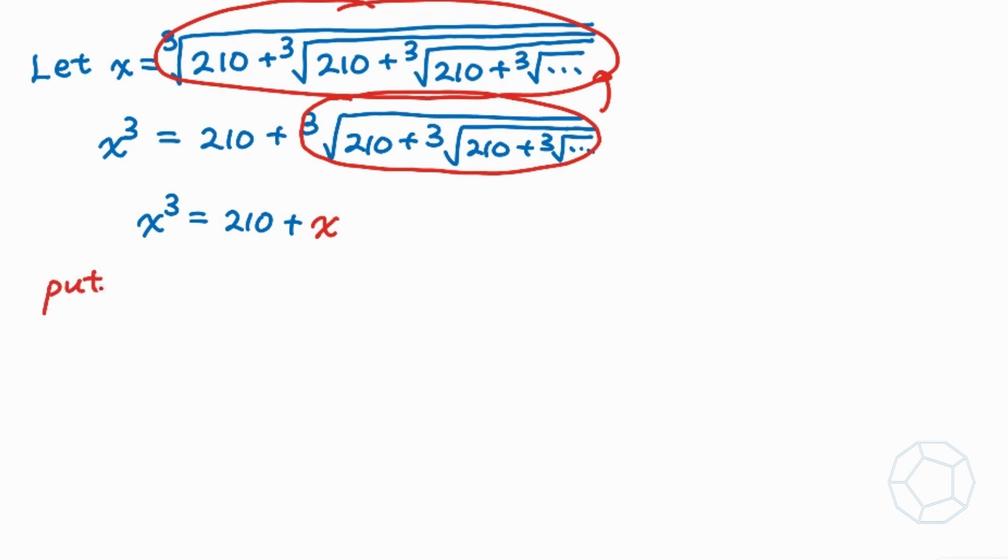Let's put some values of x to try. So if we put x is equal to 6, then the left hand side is equal to 6 cube which is 216, while the right hand side is equal to 210 plus 6 which is also 216, which is the left hand side. Therefore x is equal to 6 is a root of the cubic equation.